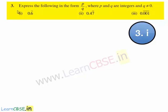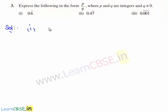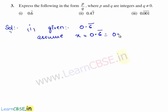Now let us move on to the third question. The question is: express the following in the form of p by q, where p and q are integers and q is not equal to 0. The first decimal expansion given is 0.6 bar. Let us assume x is equal to 0.6 bar, which is 0.666 and so on. Let this be equation 1.